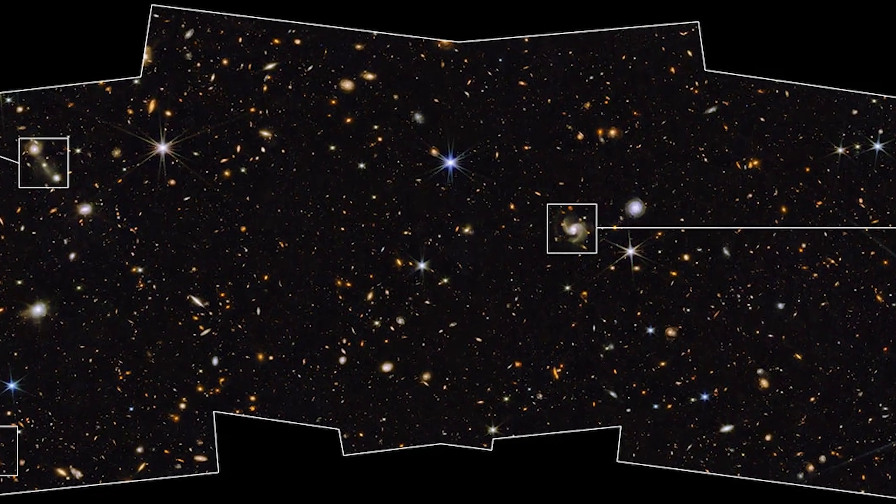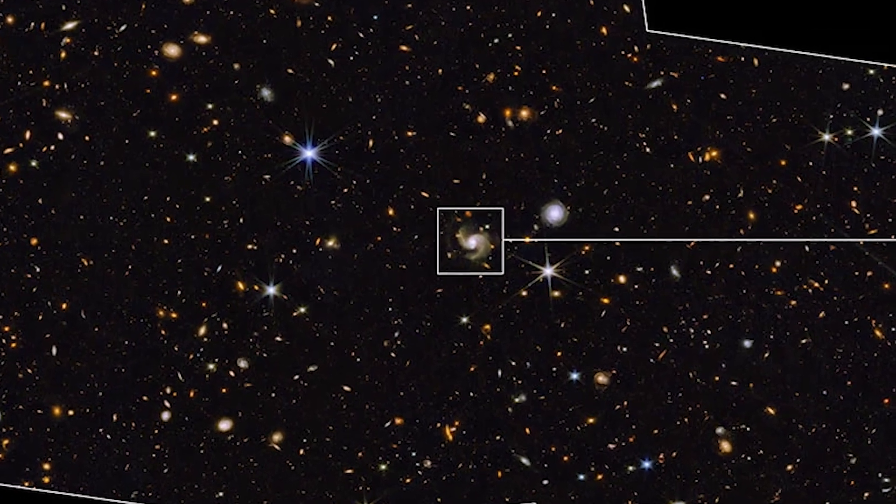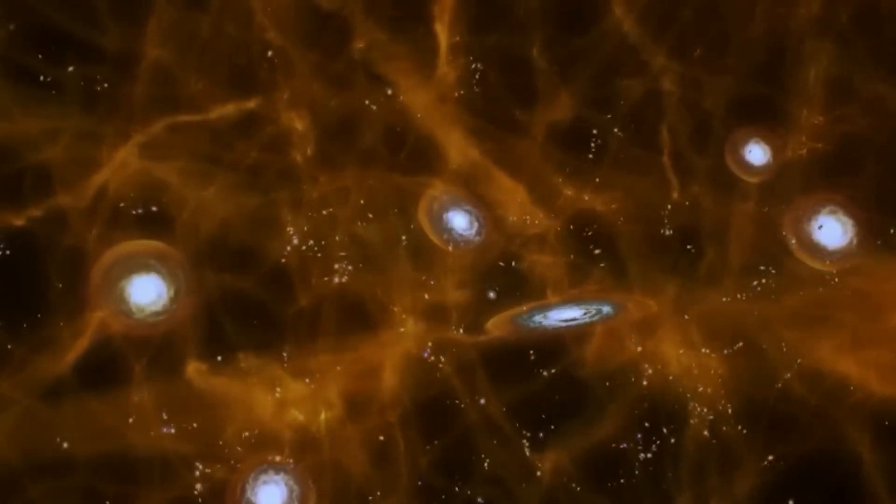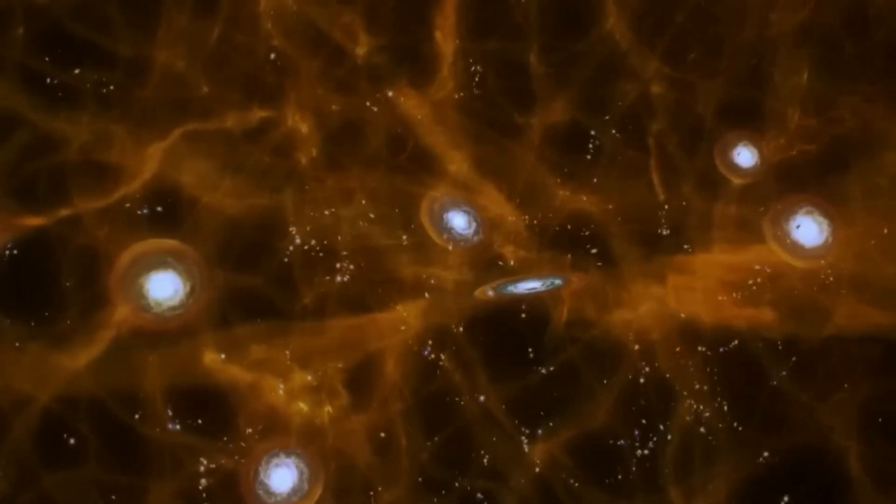In another new image, the JWST captures images of very faint galaxies in deep space. The image depicts distant galaxies stretching into deep space and covering only two percent of the sky.